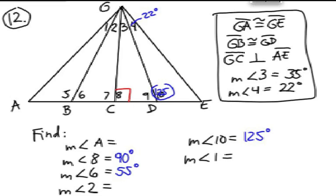Measure of Angle 8 is 90 degrees, measure of Angle 6 is 55 degrees, measure of Angle 10, 125 degrees. Let's look at this obtuse triangle here on the outside. Angle 10, 125 degrees, Angle 4 at the top, 22 degrees. Subtract those two angles from 180, and that will give us Angle E. Did you figure it out?